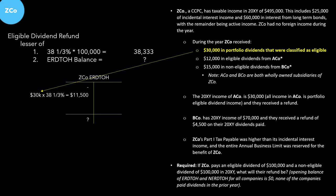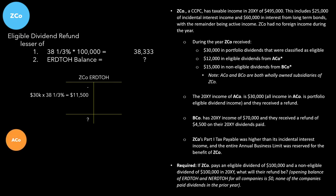The next thing we need to include in ZEDCO's eligible RDTOH account is consideration for ACO — specifically, what is ACO's dividend refund, since ZEDCO needs to include a portion of that. We weren't given ACO's dividend refund, so we have to solve for it. Let's draw out ACO's eligible RDTOH account. We know the opening balance is zero for all RDTOH accounts for all companies in this case.